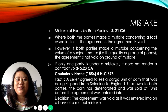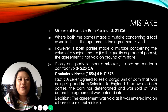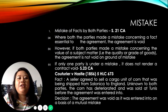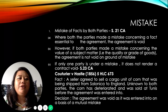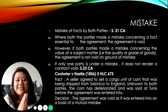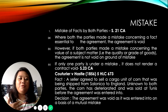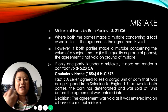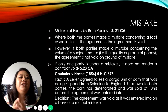Next we have mistake, which can also affect free consent. Under Section 21, we have mistake of fact by both parties. If both parties make a mistake concerning a fact essential to the agreement, the agreement is void. For example, in the case of Kuturia and H.T., both buyer and seller agreed to sell a cargo of corn, but little did they know while making the agreement, the corn had already deteriorated and was no longer there.